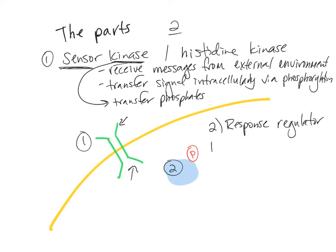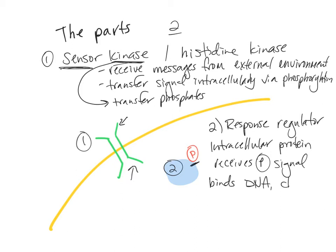This intracellular protein receives the signal from the sensor kinase in the form of phosphorylation, and can then bind to DNA to alter the gene expression based on the signal from the external environment. So it binds the DNA, and it changes the pattern of gene expression.